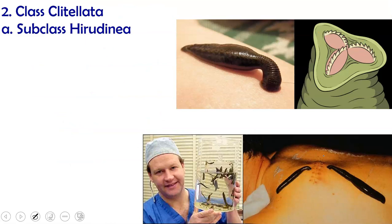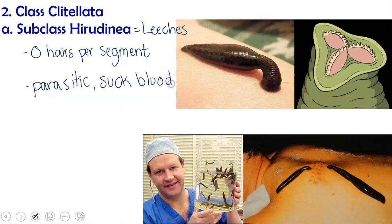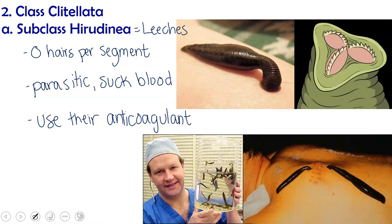Another class is class Clitellata, and within that we look at subclass Hirudinea, which is our leeches. These have no hairs per segment. Most of us know that leeches are parasitic and suck blood. However, they are also used in medicine because they produce an anticoagulant, which is a chemical that prevents blood clotting. A leech doesn't want your blood to clot because its food supply would get blocked up. We use this anticoagulant in medicine as a way to promote wound healing and other typically surgical functions.